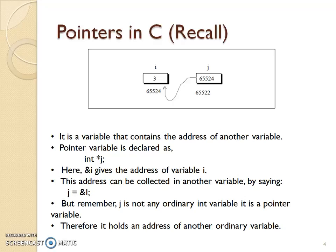Pointers in C. This diagram explains the concept of a pointer where I is declared as a simple or ordinary variable, 3 is assigned to I, and its address is 65524. Another variable J is declared which holds the address of variable I and points to it. A pointer is a variable that contains the address of another variable. A pointer variable is declared as integer asterisk J, indicating it is a pointer type variable holding the address of an integer variable.